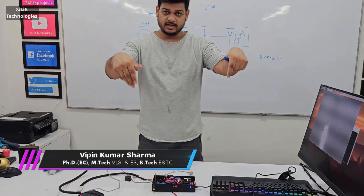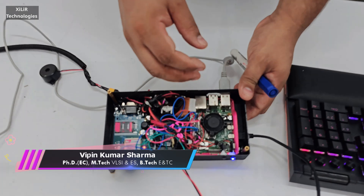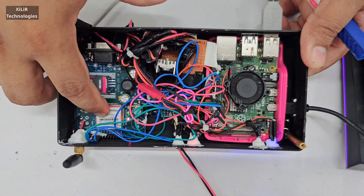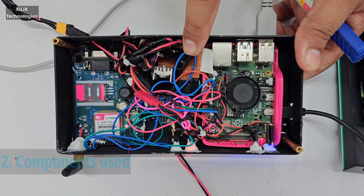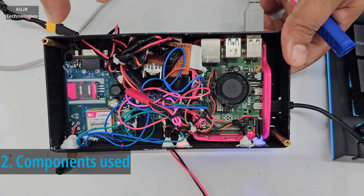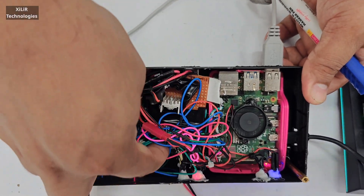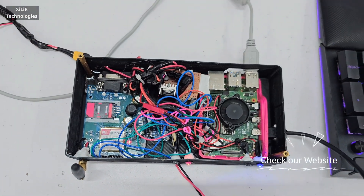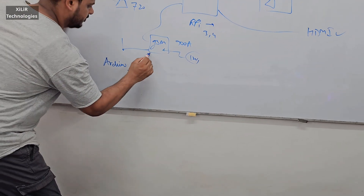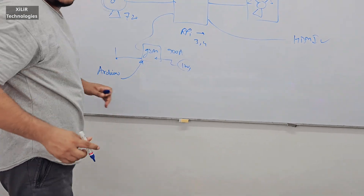Now let's see the components of this project. As I mentioned in the block diagram, this one is our GSM module. This is the power supply which is converting — or regulating — 12 volts to 5 volts. Then we have a USB port for coding. This is Arduino — an Arduino microcontroller is also being used here.